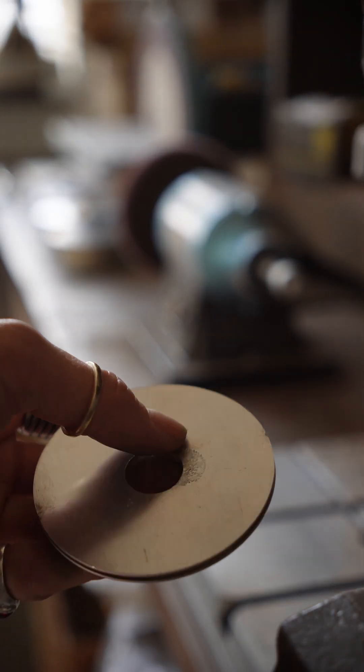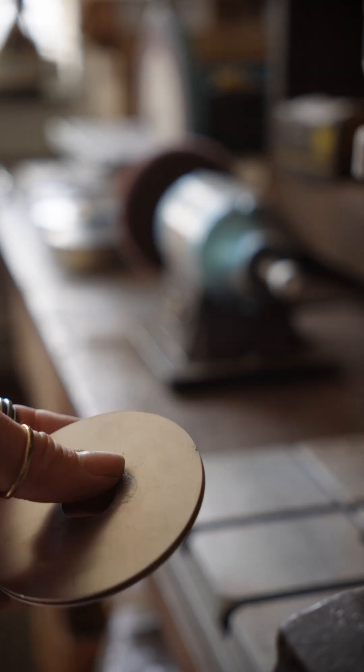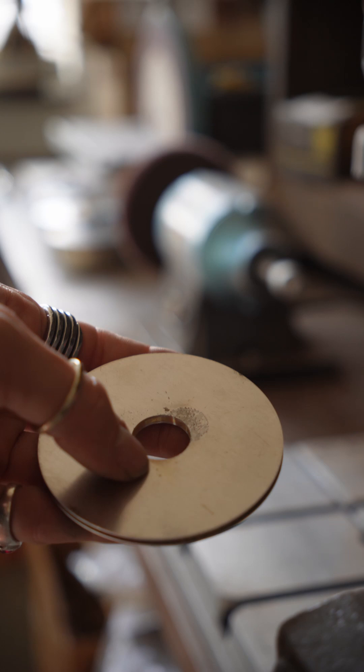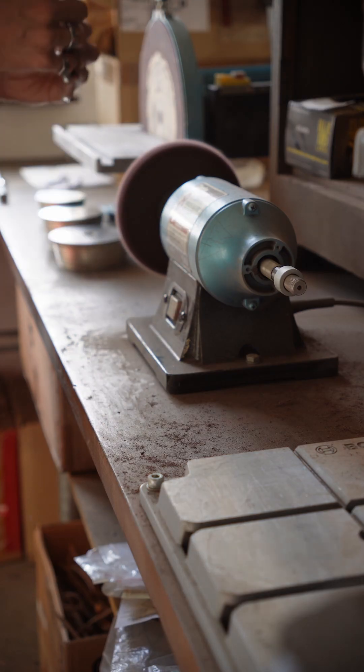Then we've got a few discs like this where the glue has spilled onto the surface, so we're just going to clean those up on the wheel and that's also going to deburr the edges and any burrs that we've made on this hole as well.